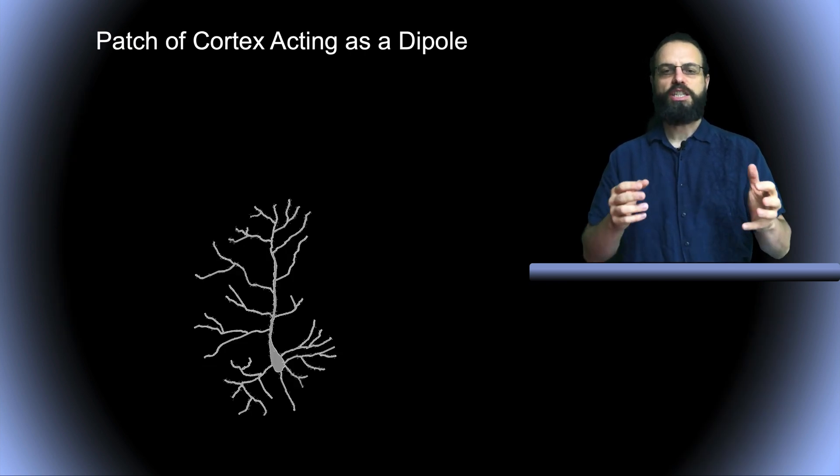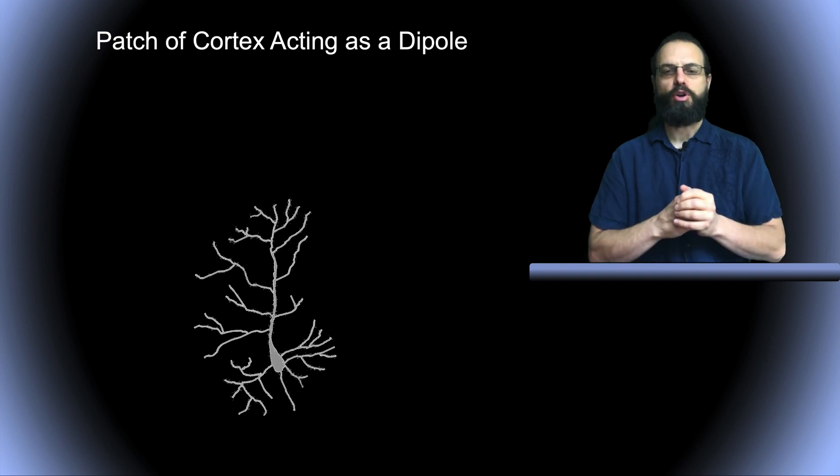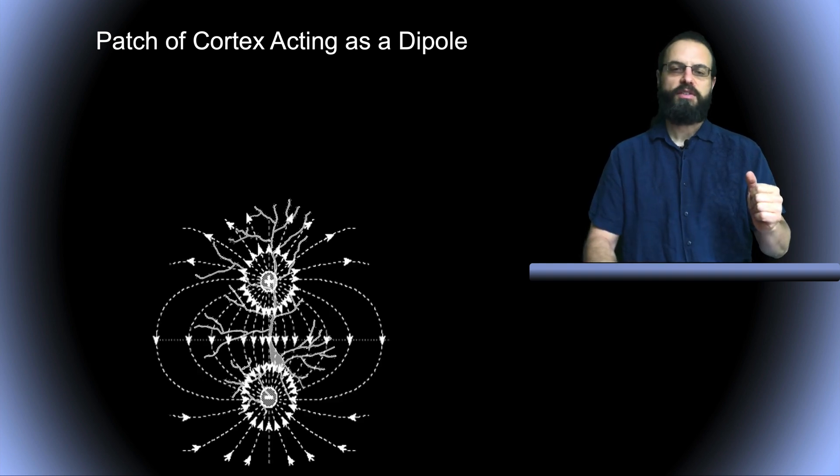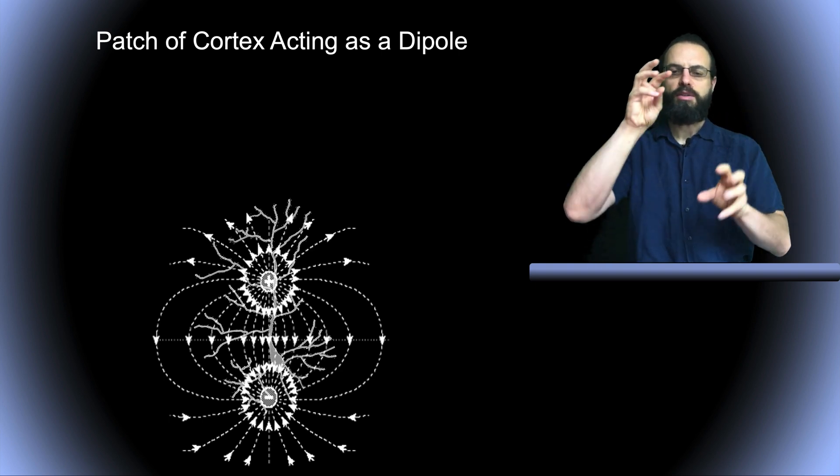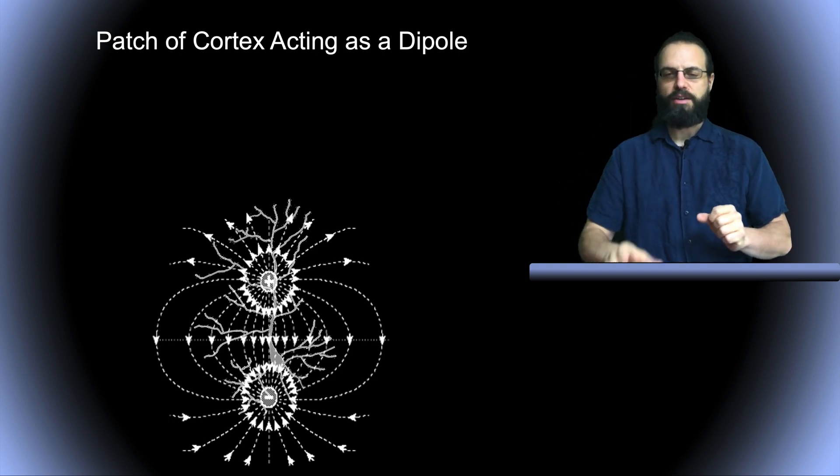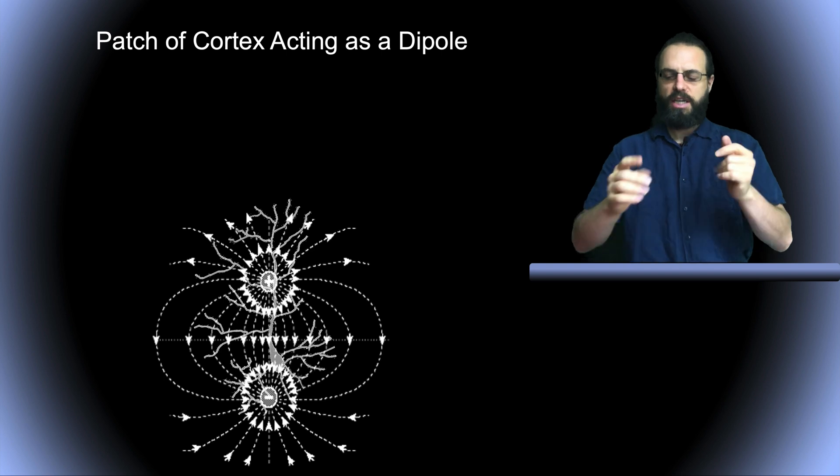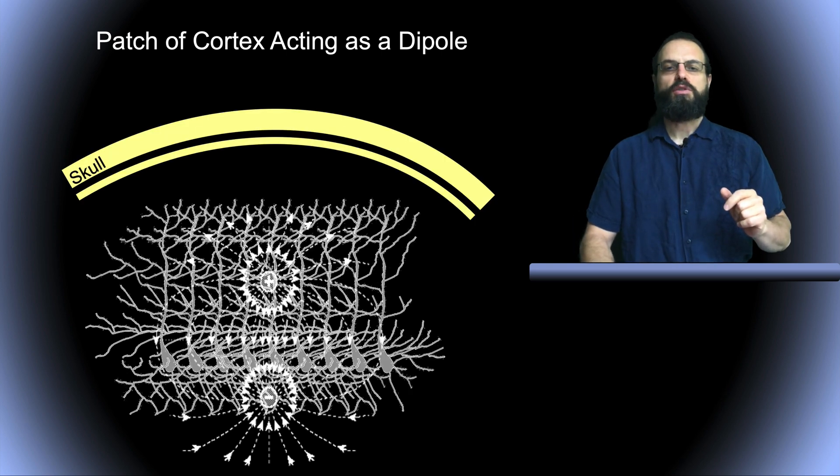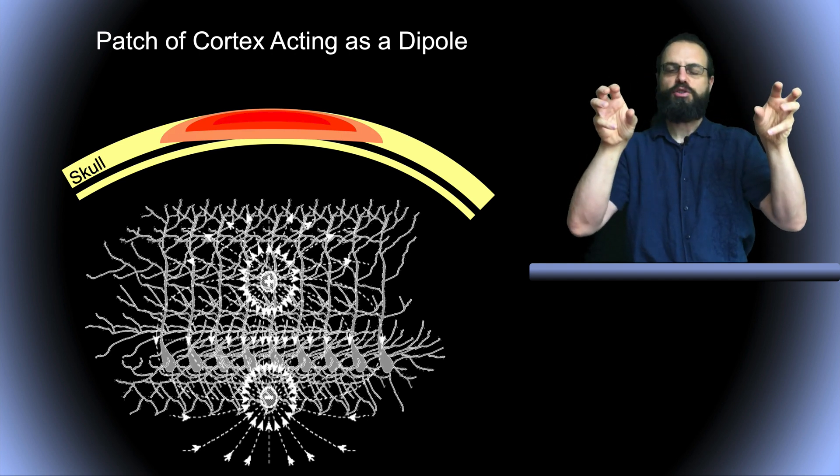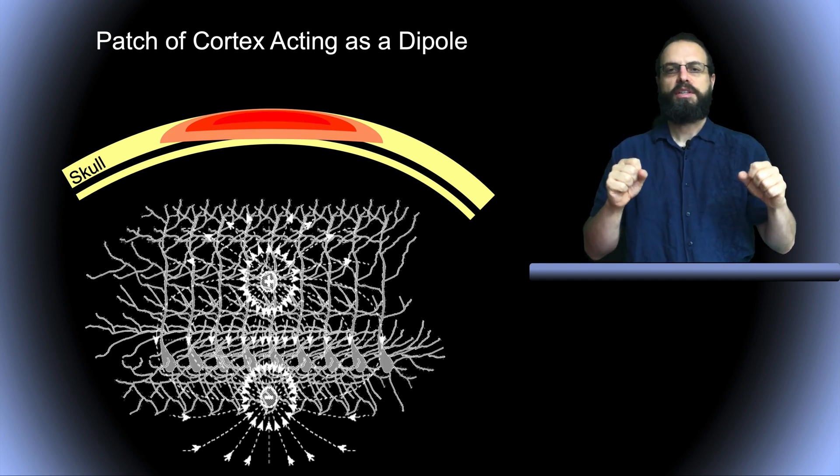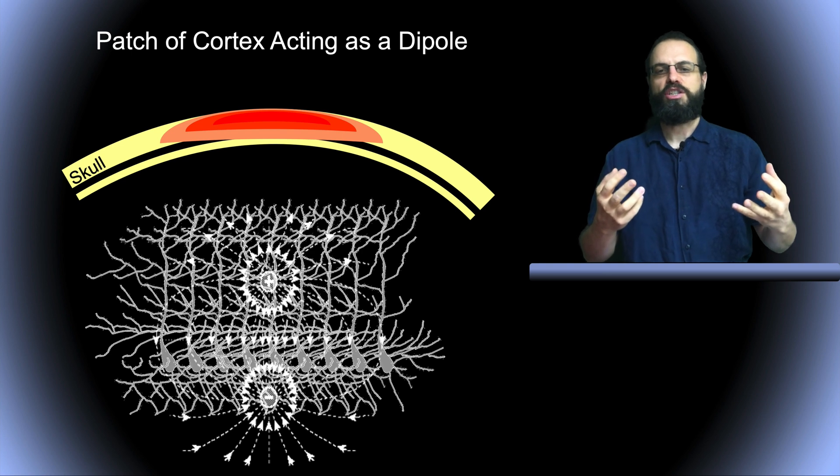If you imagine one neuron in the brain, a pyramidal neuron, this can be modeled as a dipole. It has a plus and a minus polarity, and then there's electric fields. If you have many of these neurons, the electric field can be summed up and seen at the surface of the scalp. That's the schematic representation of what might be happening with source-like dipoles.